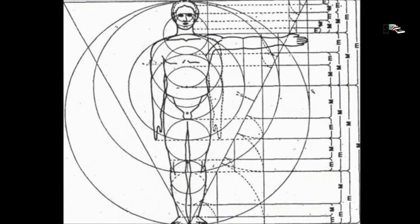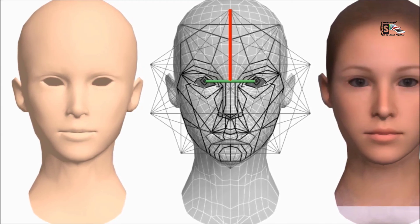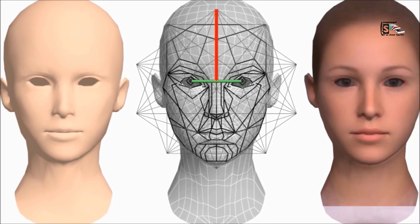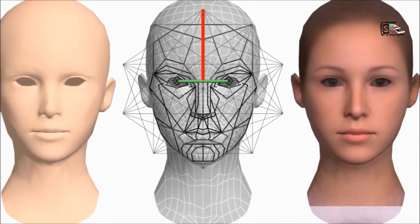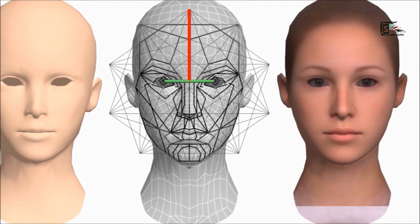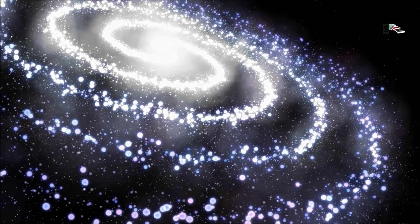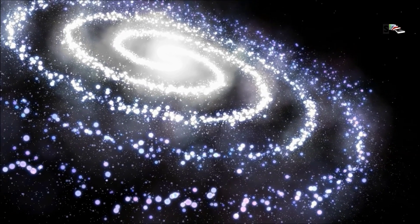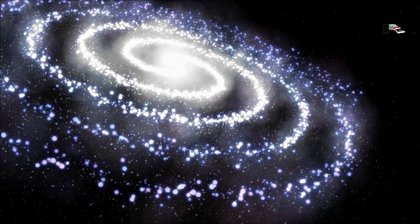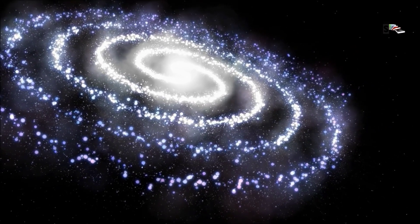These spirals can be found on our face — it is filled with spirals. Our head forms a golden rectangle with the eyes at its midpoint, and the mouth and nose are placed at golden sections of the distance between the eyes and the bottom of the chin. This same sequence can be found in galaxies and the universe itself.